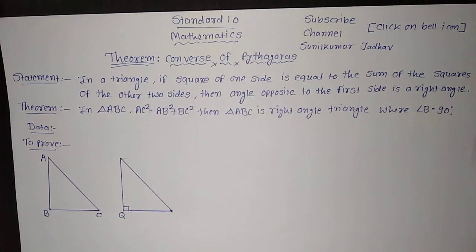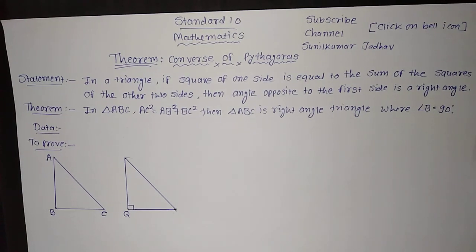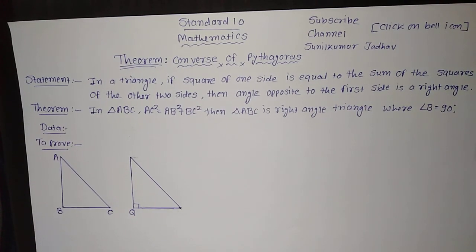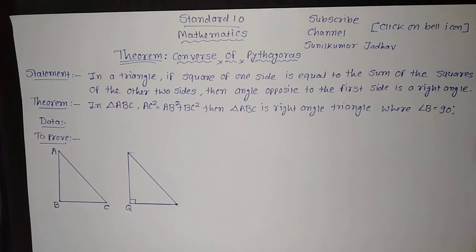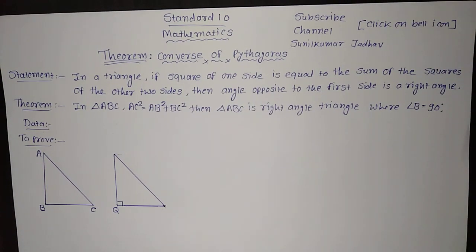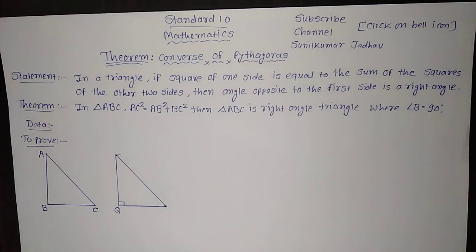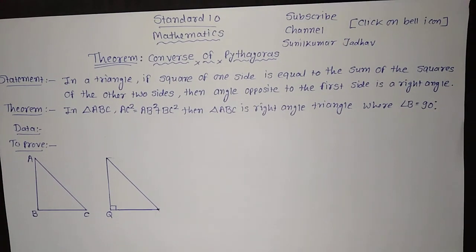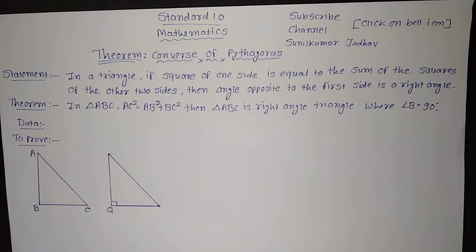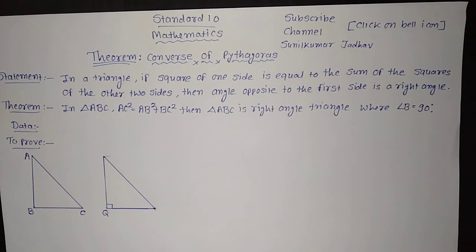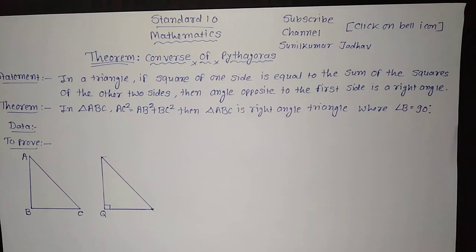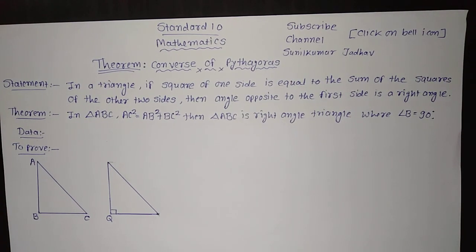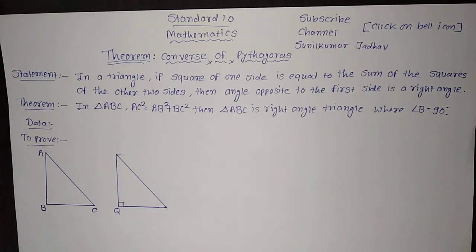This is the Converse of the Pythagoras theorem. This theorem can be asked in the exam in different ways: write the statement of Converse of Pythagoras theorem and prove it; or sometimes they change it to: write the statement of Pythagoras theorem and prove the Converse. In that case, students mostly make mistakes — they read the statement of Pythagoras theorem and then prove Pythagoras theorem instead of its converse. So while answering any question in the examination, be careful to read and understand the question first.